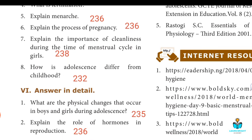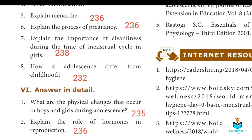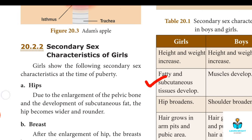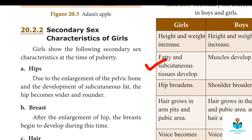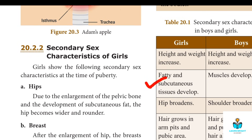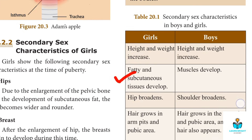Next: Answer in detail. First question: What are the physical changes that occur in boys and girls during adolescence? The answer is on page number 235 — secondary characteristics in boys and girls, including increase in height and weight.